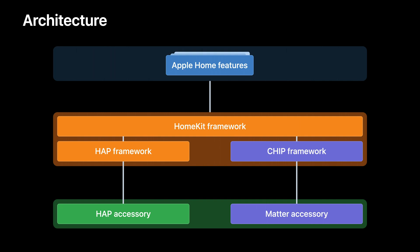When we look at integrating Matter accessories with Apple Home, we naturally came to the conclusion that we could expand the responsibility of the HomeKit framework to support Matter as a parallel protocol. Architecturally, this means that HomeKit calls into the open source Matter implementation, known as the CHIP framework, in order to communicate with Matter accessories. The earlier name for the Matter project was Connected Home over IP, or in short, CHIP. That's why throughout today's talk you will still see the reference of CHIP both in the open source project and our APIs. We expect to have updated naming for the APIs in a later release.